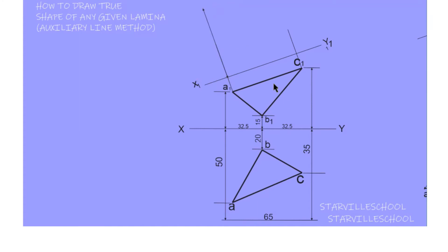Next you have to pick the length from the plan again — from C to the XY line. With your divider or compass you pick the length and measure it out right there.